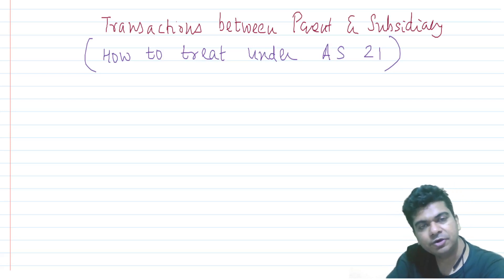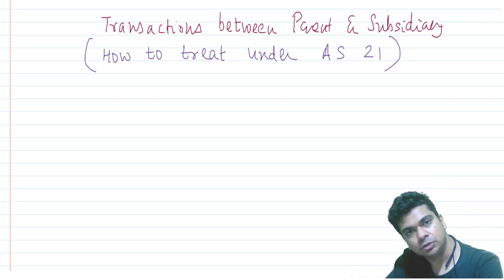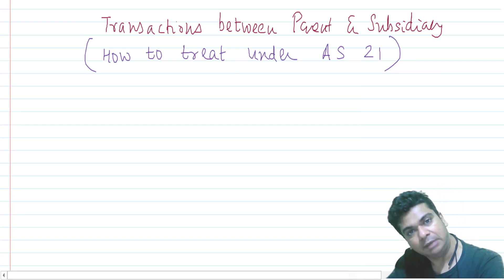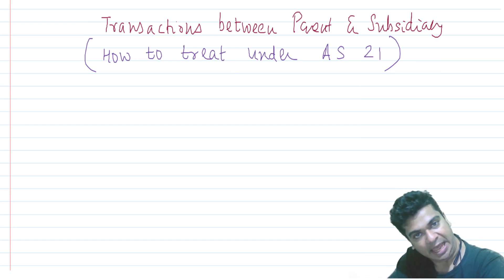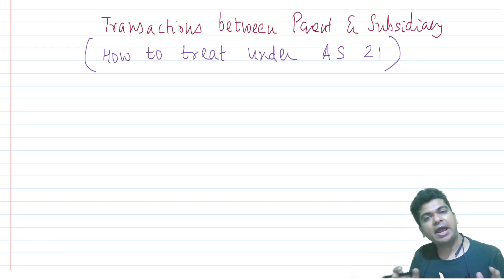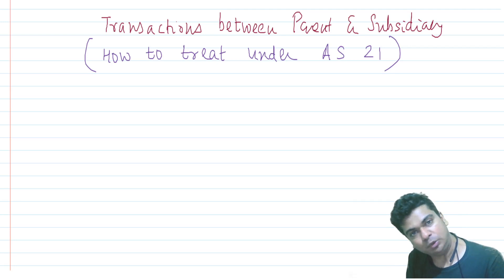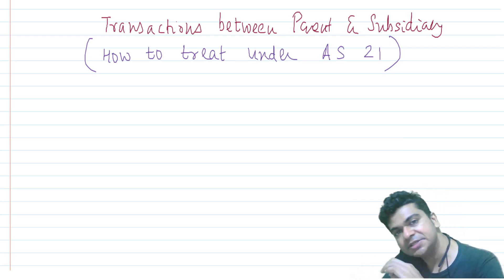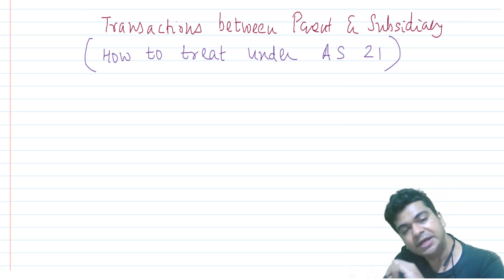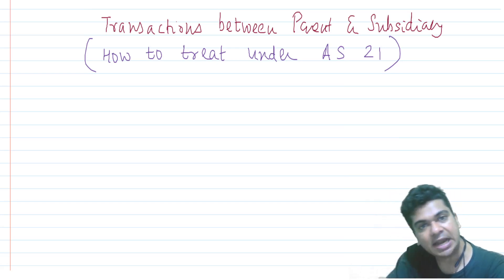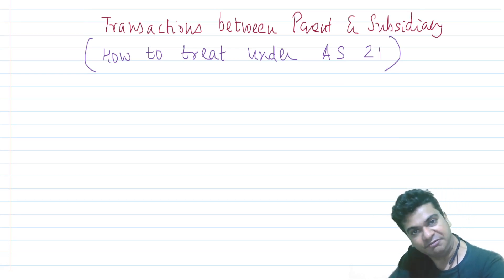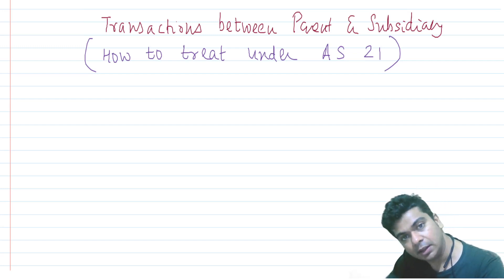Normally a parent and subsidiary relationship is established so that the parent can derive economic benefits from the subsidiary. Given this background, it is natural that there shall be transactions between them. Right now, the parent and subsidiary are two separate companies doing transactions with each other. But when preparing consolidated financial statements, I will consider the parent and subsidiary to be a single company.